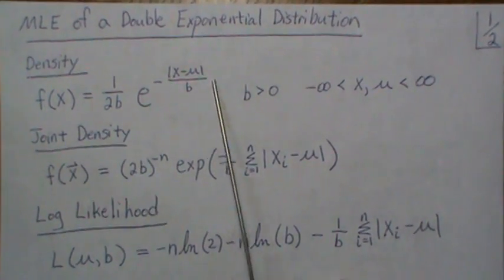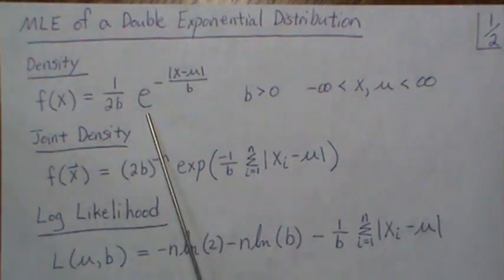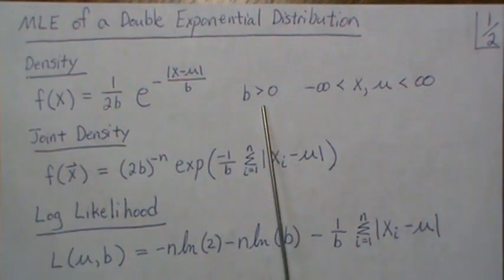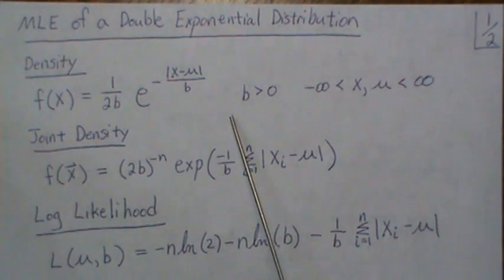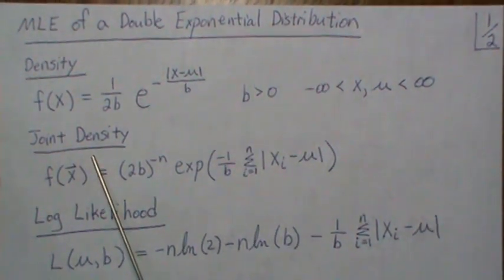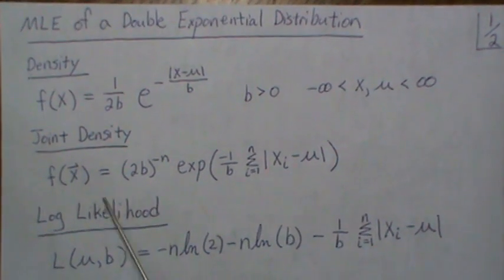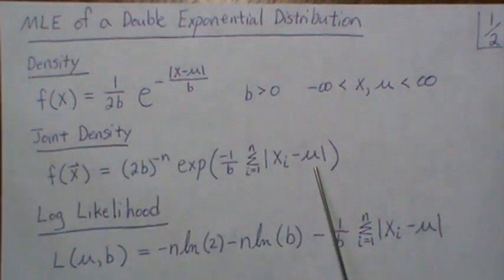Here the density is given by this two parameter density, where B is positive and X and mu are real numbers. And the joint density, that if we take a sample size n, would be this.